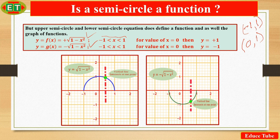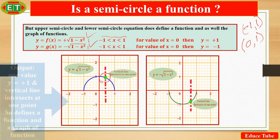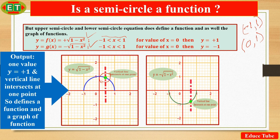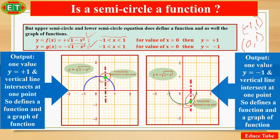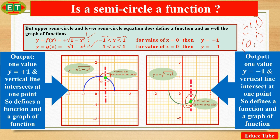Here, in the first graph — the upper semicircle — the vertical line intersects at one point, as we can see. So it is a graph of a function. In the second graph, the lower semicircle also intersects the vertical line at one point. So it is a graph of a function as well. Yes, it is a graph of a function because it intersects in one point.